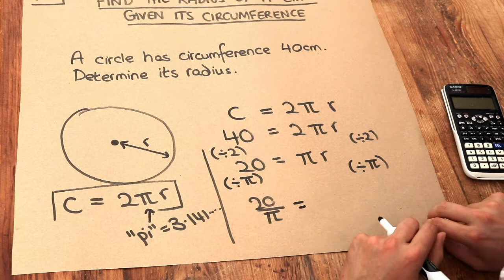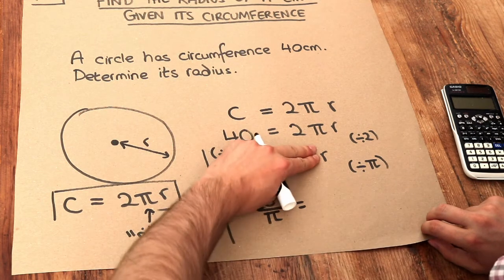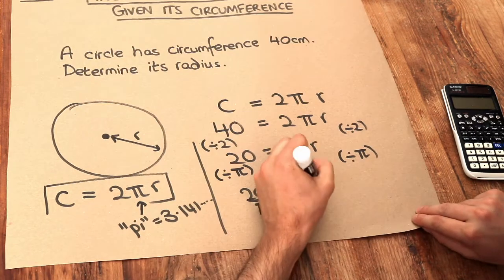And when we divide the right-hand side by π, that just gets rid of the times by π. So I'm just left with R.